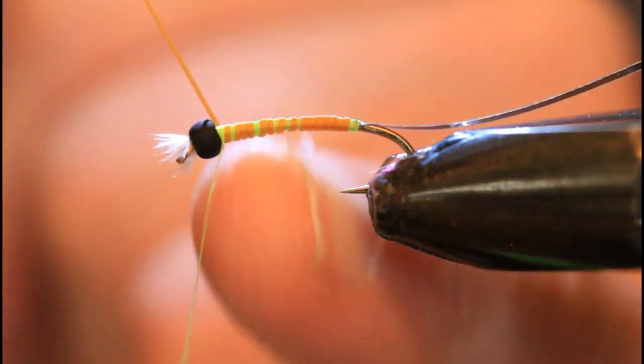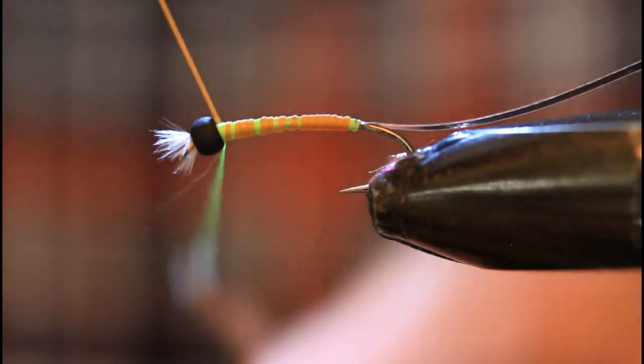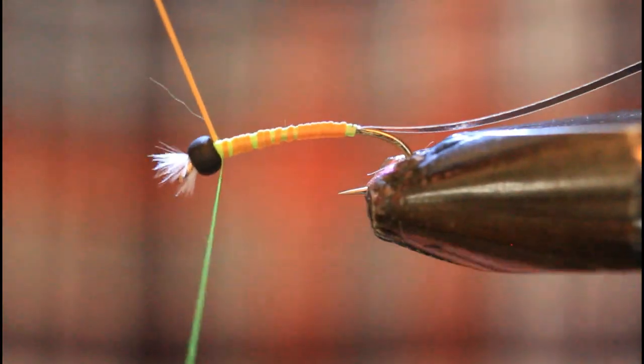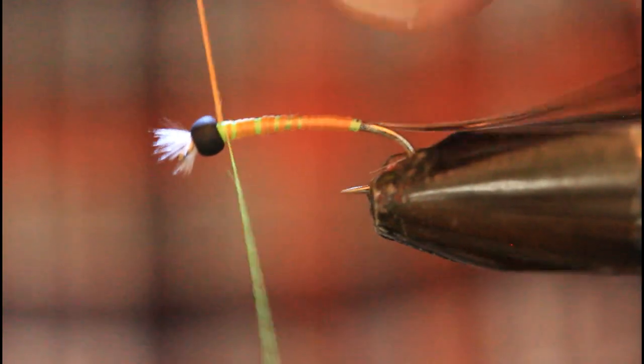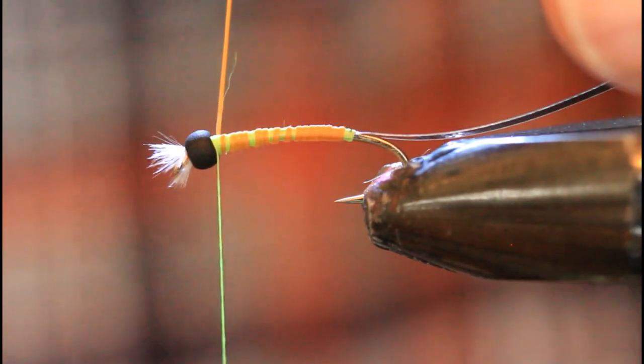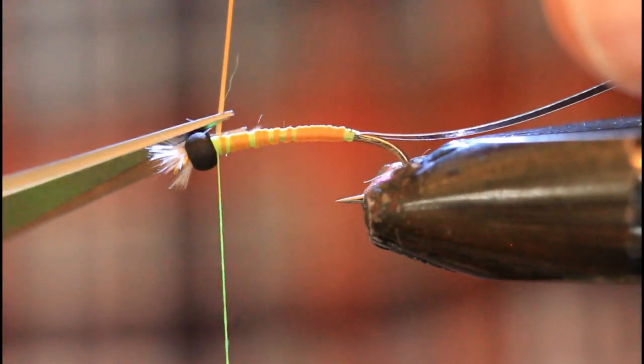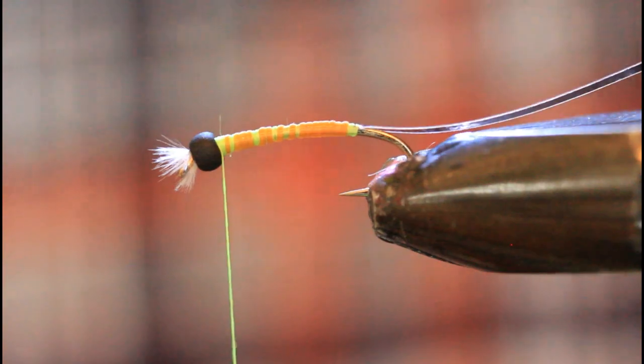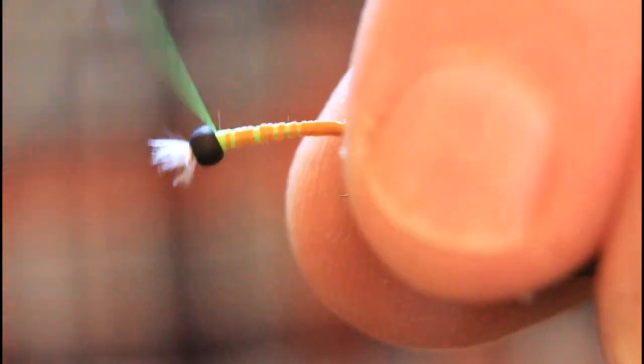And then leave another gap there. Just kind of random you select. But I like to do them from about midpoint forward. That's where the chartreuse, the green, tends to show up on those naturals. And I'm pulling the Ultra Stretch tight as I do this. And locking it in place. And then I cut it. And that tag end will just suck in under the thread like that. Another wrap or so.